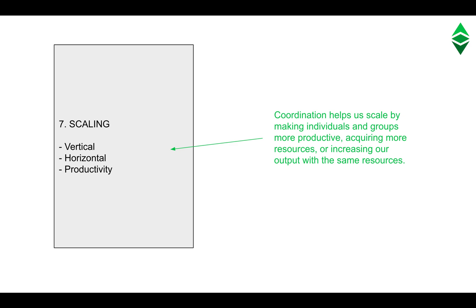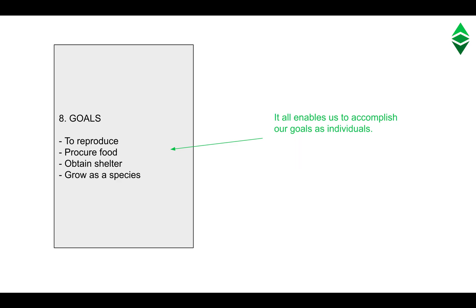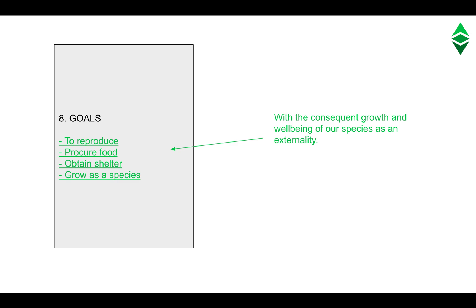Seven: scaling. Coordination helps us scale by making individuals and groups more productive, acquiring more resources, or increasing our output with the same resources. Eight: goals. It all enables us to accomplish our goals as individuals, with the consequent growth and well-being of our species as an externality.